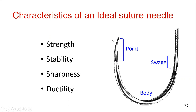The tissue should not be torn — only a small hole should be made. Ductility refers to the needle's resistance to breaking under a given amount of bending. It will bend before it breaks. This bending quality of the needle is what is called ductility. So these are the four characteristics of an ideal suture needle.